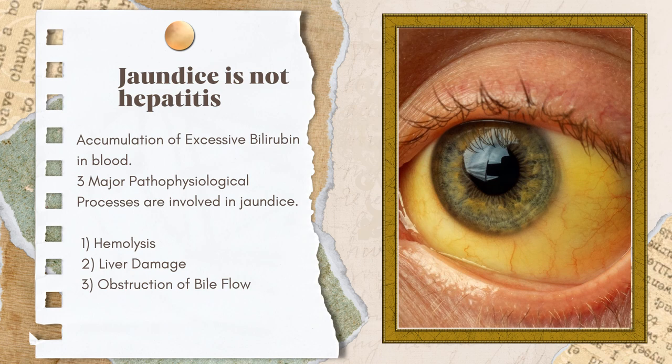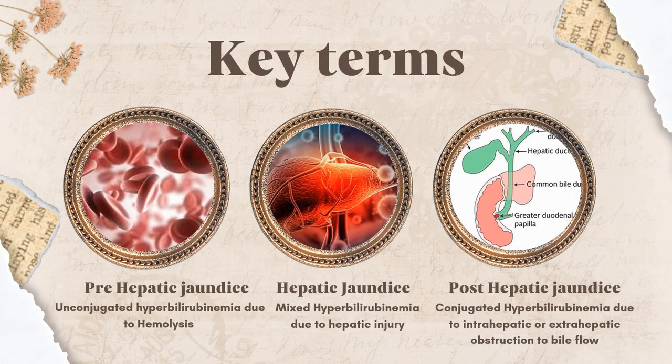Jaundice has three major pathophysiological processes: it can occur due to hemolysis, due to liver damage, or due to obstruction to bile flow. The key terms we will use in this lecture are: first, pre-hepatic jaundice; second, hepatic jaundice; and third, post-hepatic jaundice.